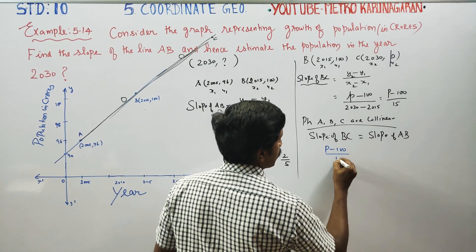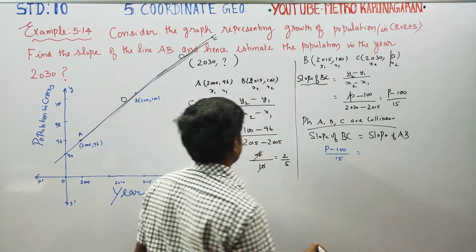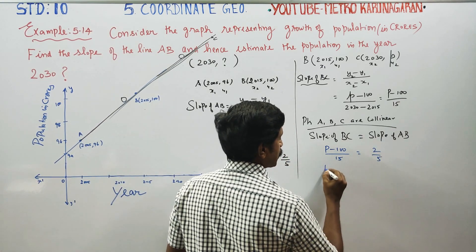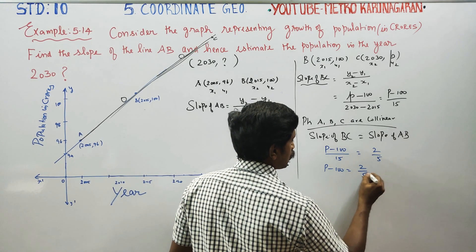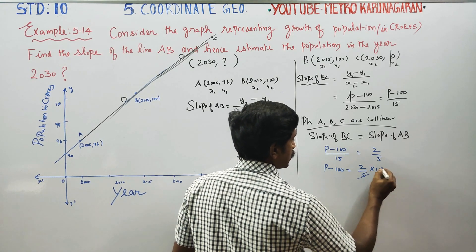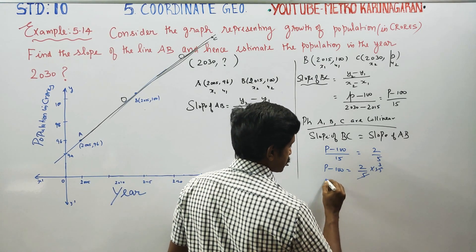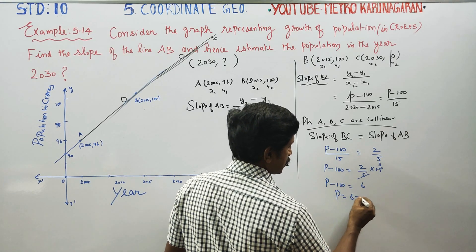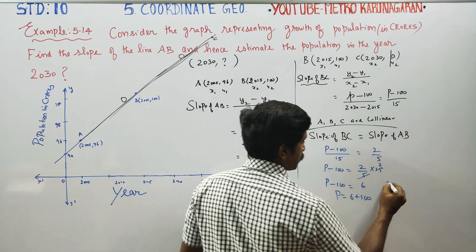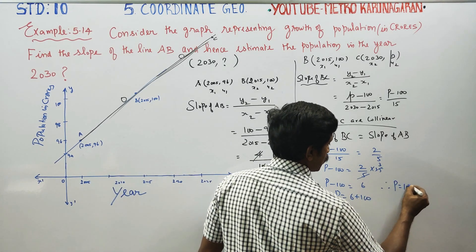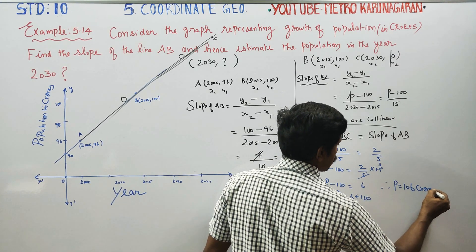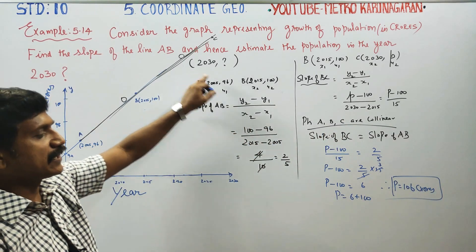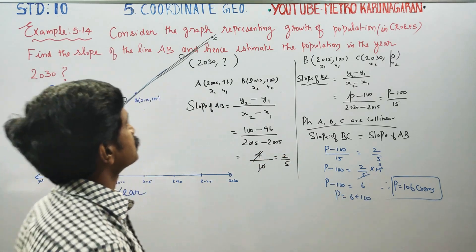So (p − 100) / 15 = 2/5. Cross multiplying: p − 100 = (2/5) × 15 = 6. Therefore p − 100 = 6, which gives p = 106 crores. So in 2030, the population is 106 crores.